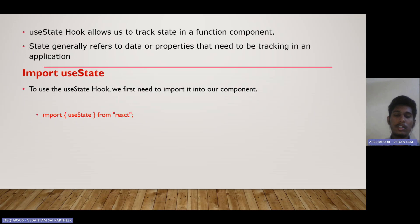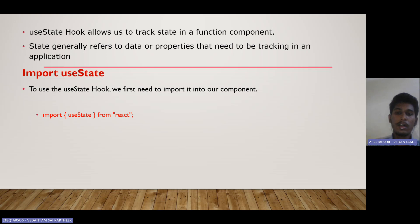So what is the useState hook? The useState hook allows us to track the state in a functional component. State generally refers to the data or the property that needs to be tracked in an application. For example, if we are using a form, in that form we usually change the data, and those kind of data should be tracked in an application. That refers to the state.